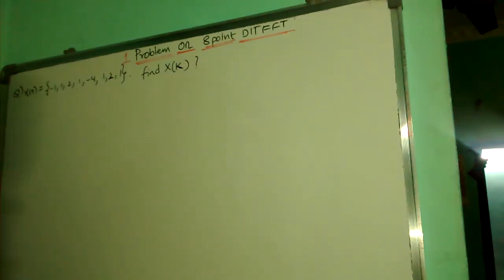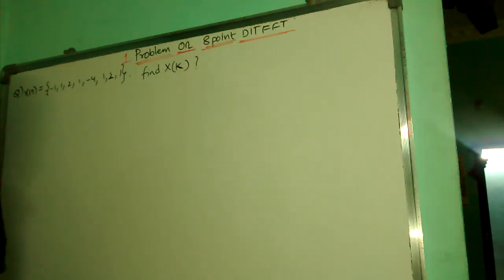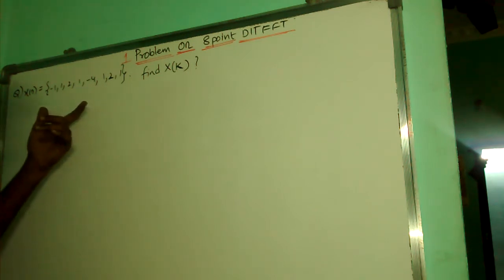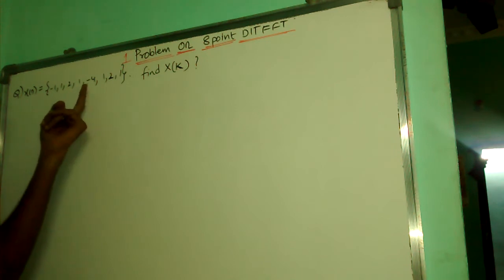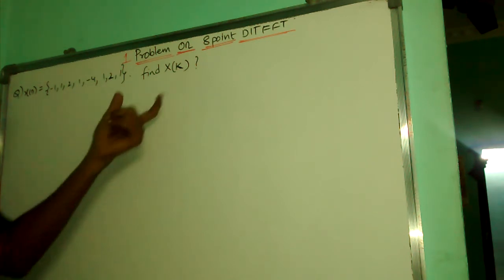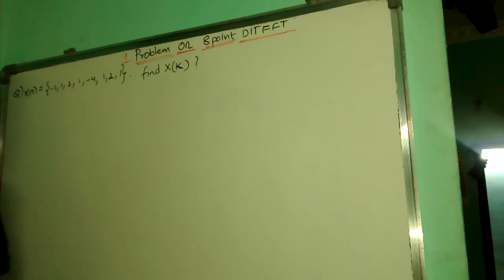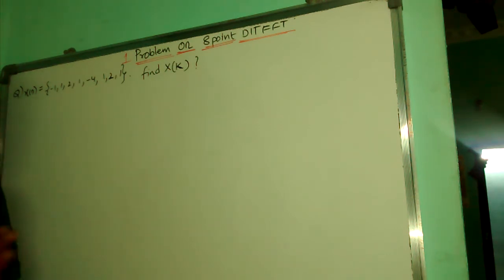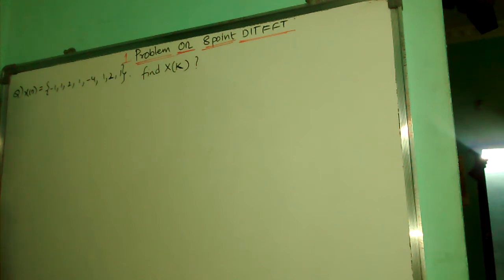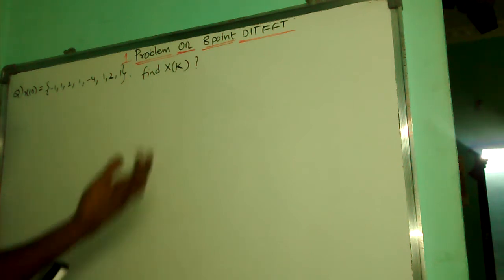In this video we are going to learn how to solve a problem using 8-point DFT FFT. The given question has 8 samples: -1, 1, 2, 1, -4, 1, 2, 1. They are asking us to find X of k. In the last class we already saw the properties of DFT and FFT and what the twiddle factors are. Using these two concepts we will solve this problem.